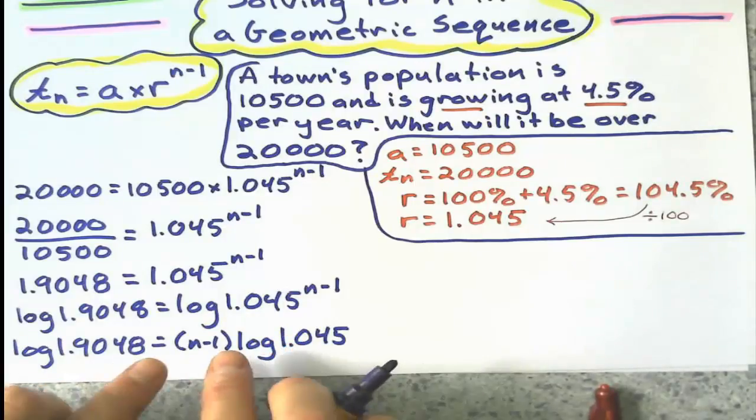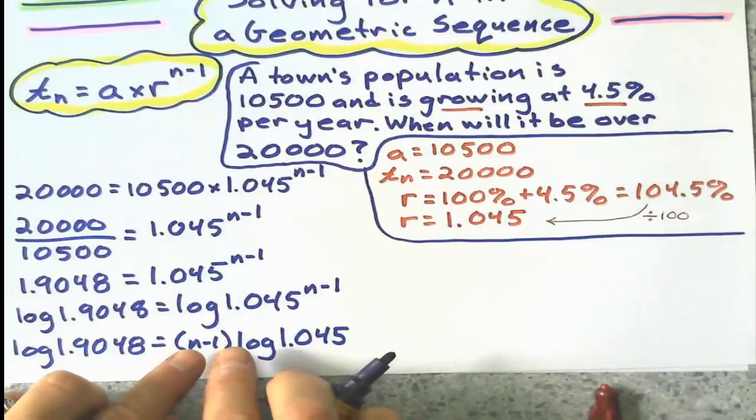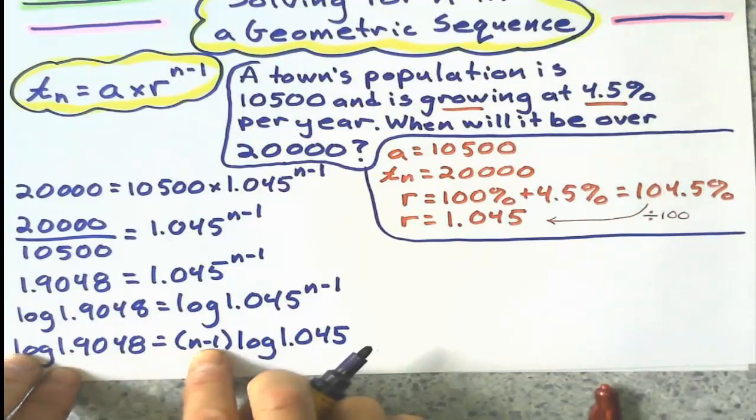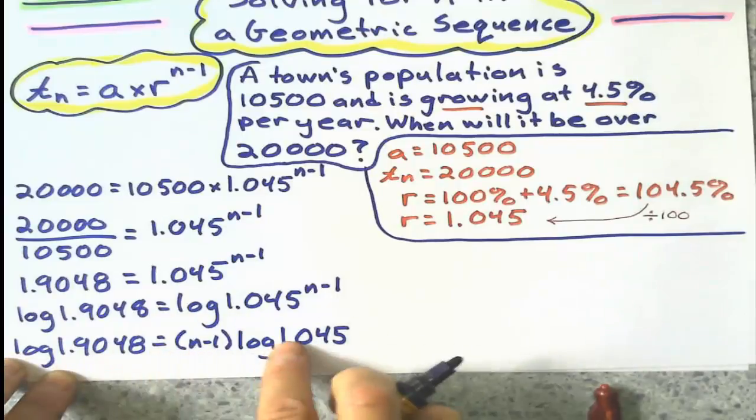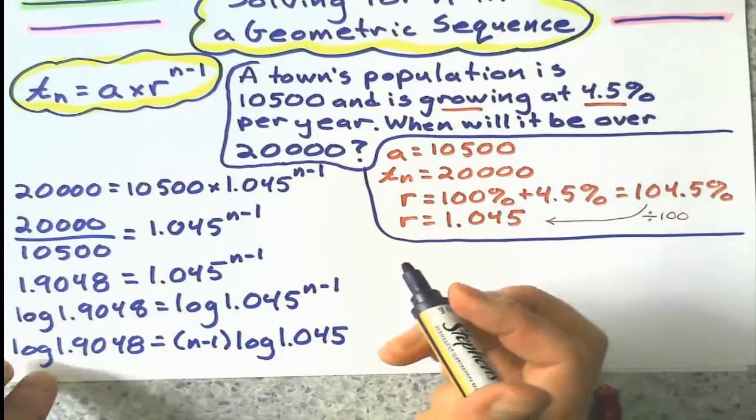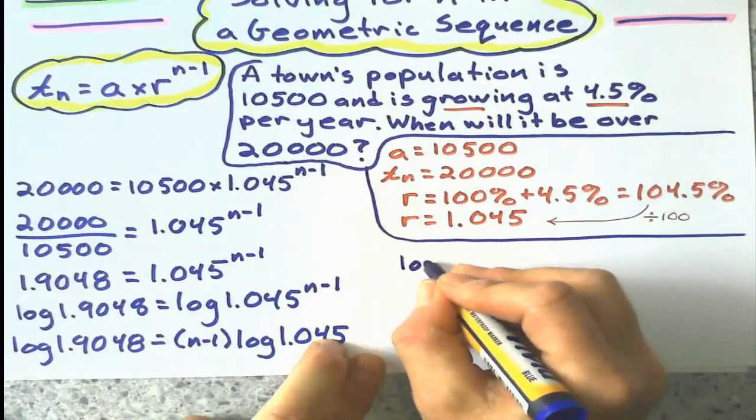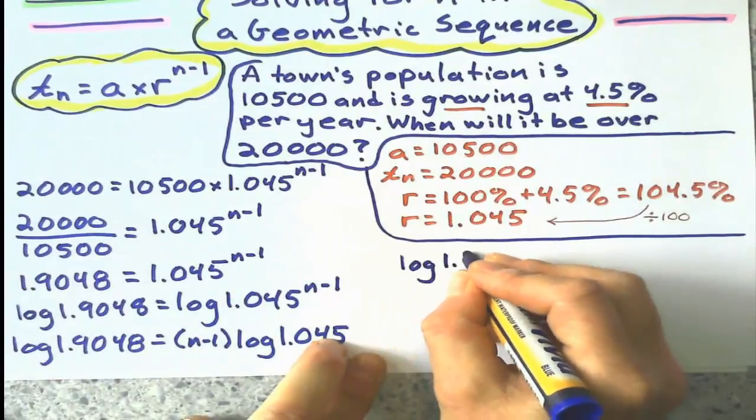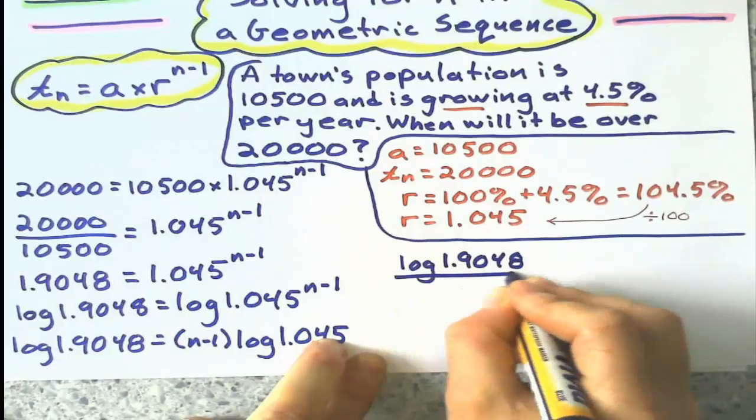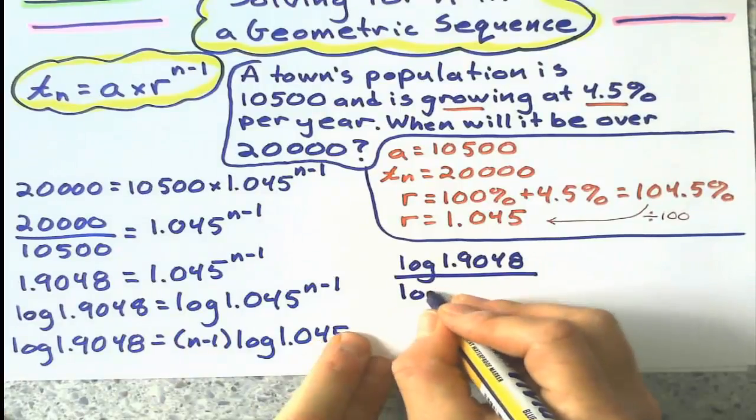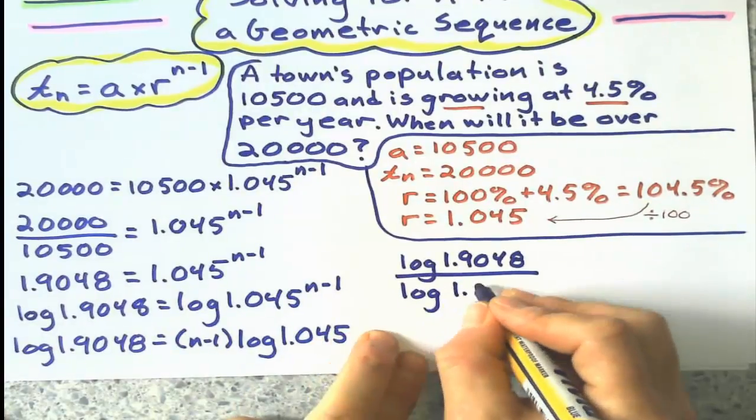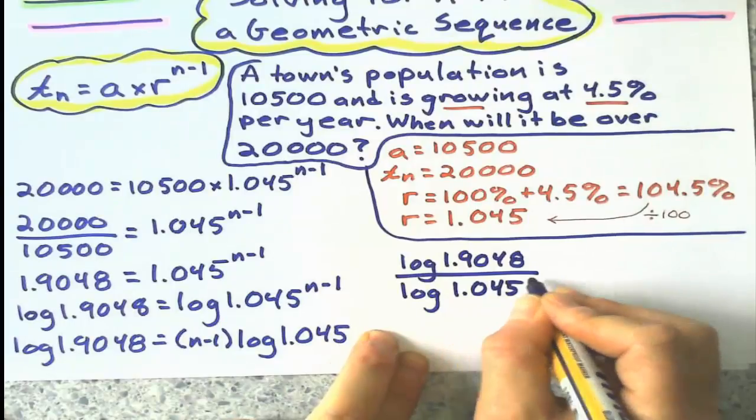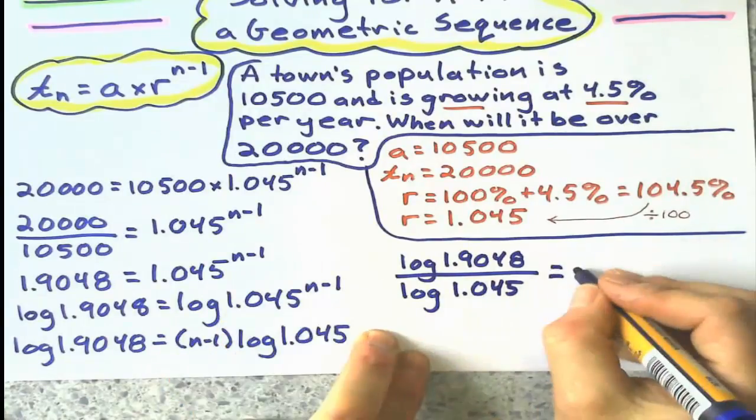Now, what I'm going to do is I want to see if I can get that n minus 1 by itself. And in order to do that, I'm going to divide this log by this log. So when I say log 1.9048 divided by log 1.045, what I'm left with is just n minus 1.